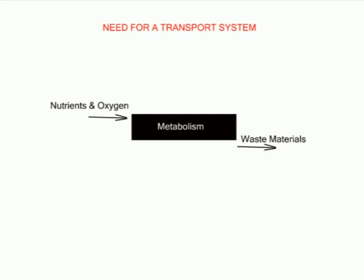This exchange of materials is achieved through a transport system. Different organisms in the kingdom Animalia have different transport systems and mechanisms. Some are simple and some are very complex. In this chapter we look at these transport systems, ranging from simple diffusion in unicellular organisms to the elaborate and complex systems in mammals.